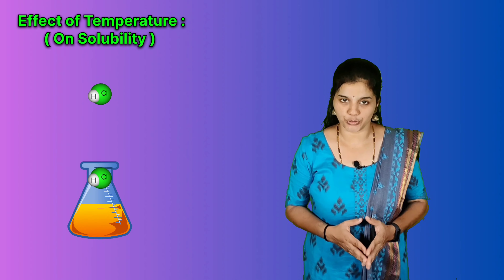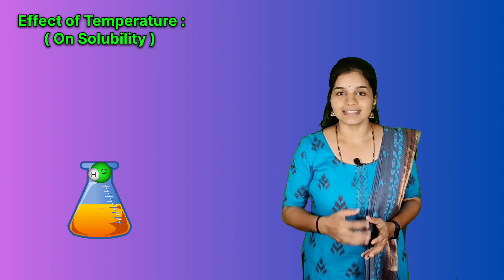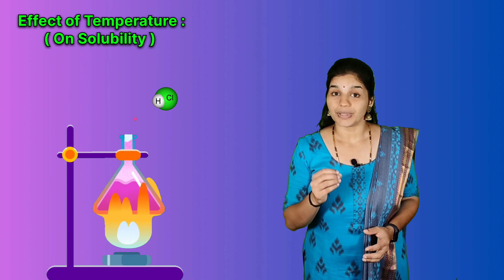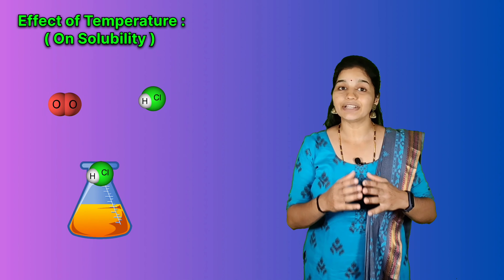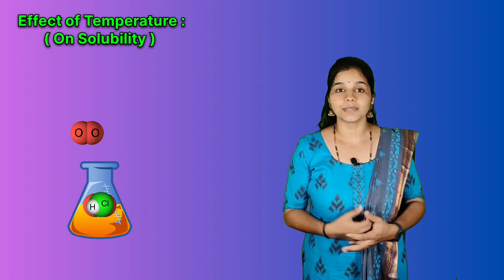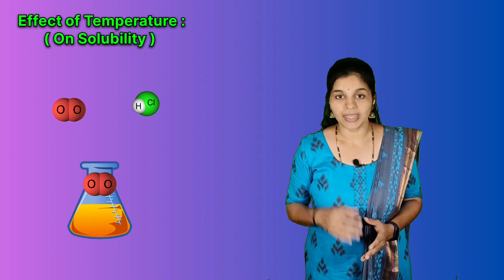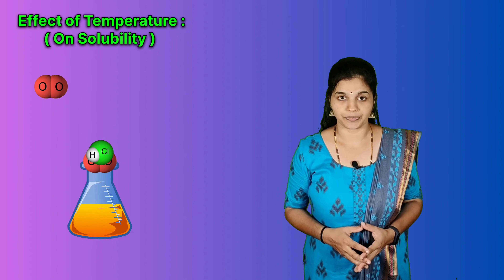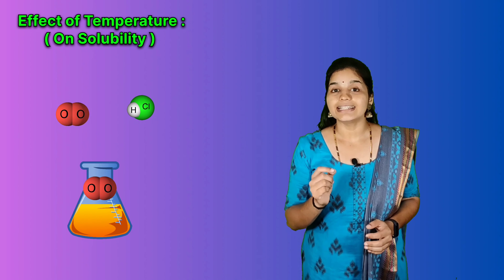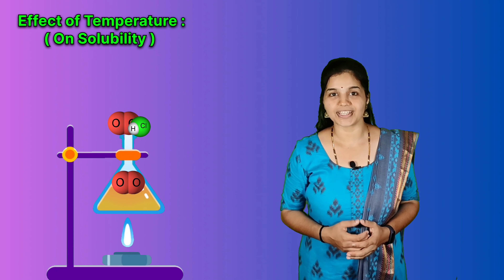If we ask how temperature affects the solubility of gases in liquids, the answer is that solubility of gases decreases with increase in temperature. When dissolved, gas molecules are present in the liquid phase, so the dissolution of a gas in liquid is similar to condensation — heat is liberated, making the process exothermic. Since dissolution involves dynamic equilibrium, it follows Le Chatelier's principle. Because dissolution is exothermic, solubility of the gas decreases with increase in temperature.